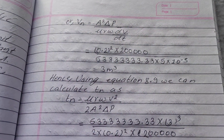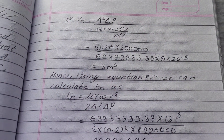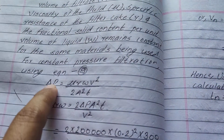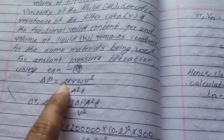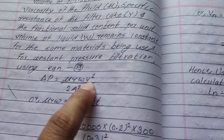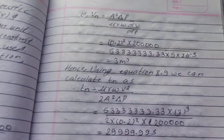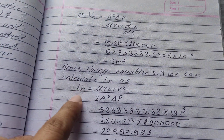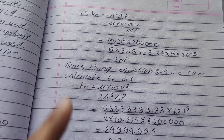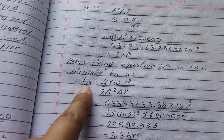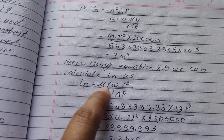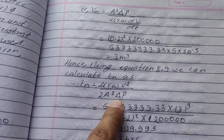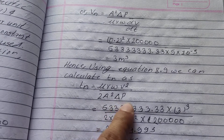Using the constant pressure equation, to find the time tn: ΔP = μrwb² / (2A²t), rearranging gives tn = μrwb² / (2A²ΔP).